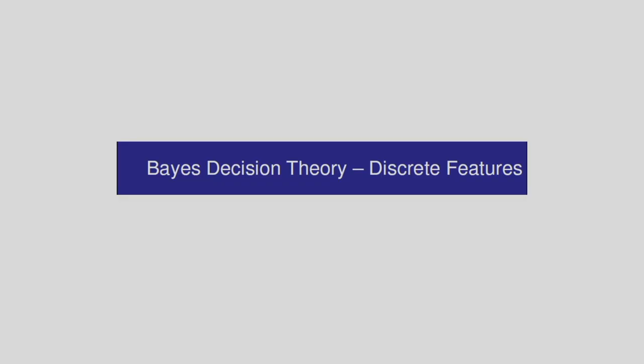Today, I will continue the discussion on Bayesian decision theory, but in this case I will consider discrete features. I will explain what continuous features and discrete features are, and based on this I will explain the concept of Bayesian decision theory. So, let us see Bayesian decision theory for discrete features.